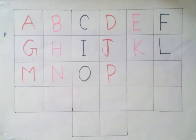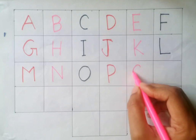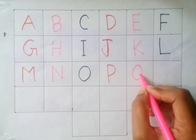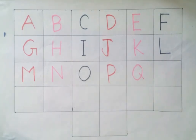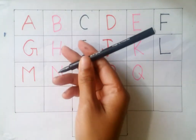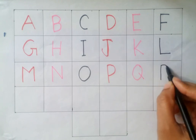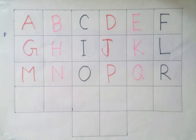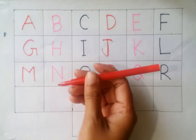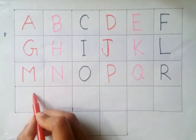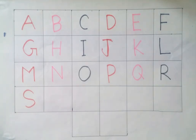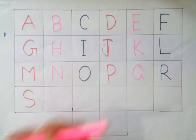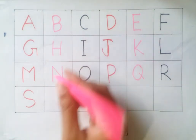P for pain. Pink color. Q for queen. Black color. R for rose. Red color. S for swan.